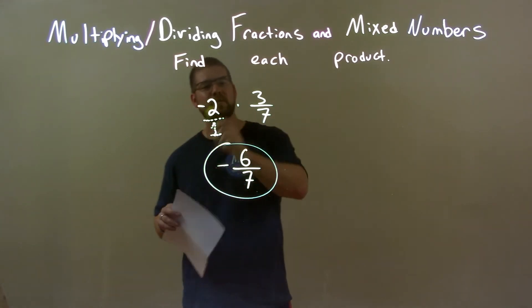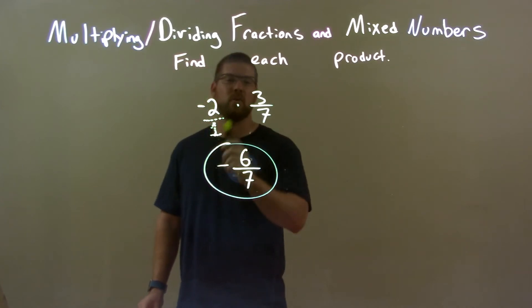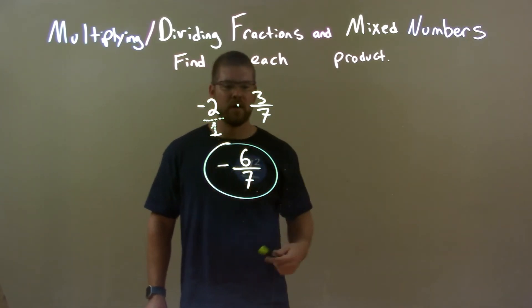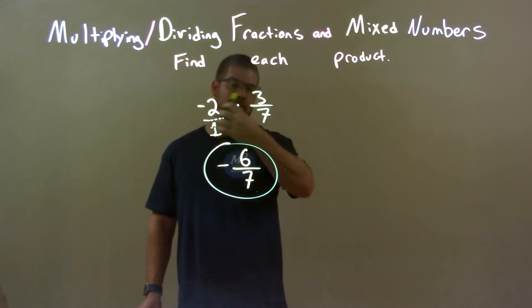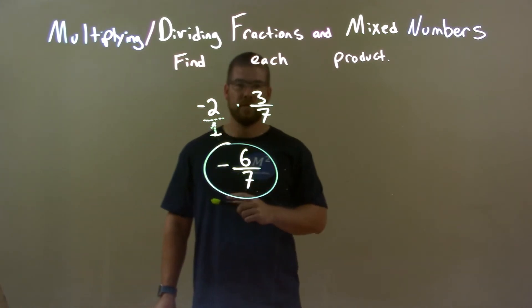So quick recap: we're given negative 2 times 3/7. We know negative 2 is the same thing as negative 2 over 1. Multiply this out across the numerator and across the denominator. We get negative times positive is negative. So our final answer again is negative 6 over 7.